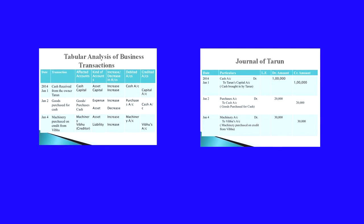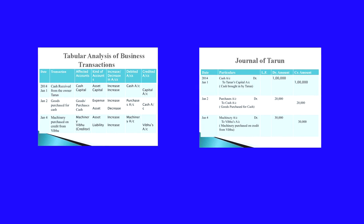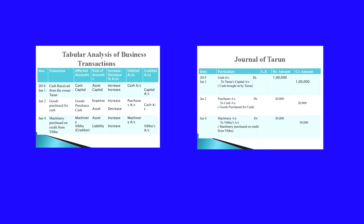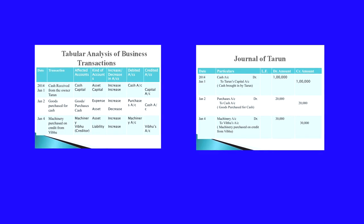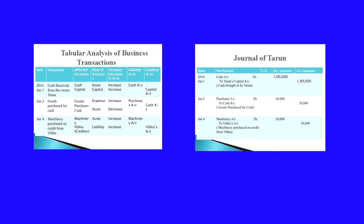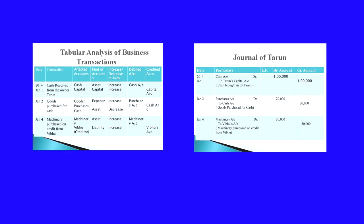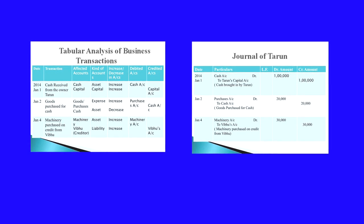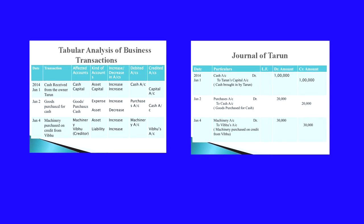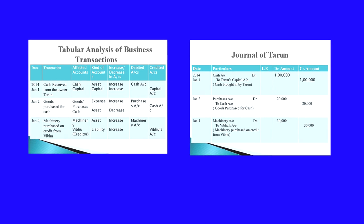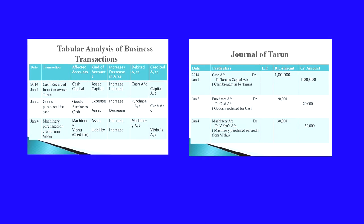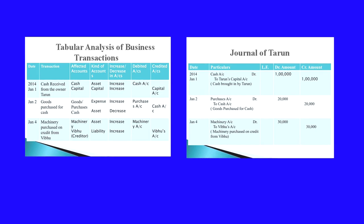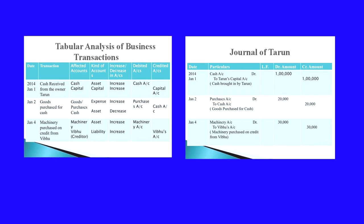We have to identify which accounts are affected. Cash is received from the owner, so cash is coming inside the business — cash is one account. It is coming in the form of capital, so capital is also another affected account. Cash falls under the asset account and capital under the capital account. In this transaction, cash is increasing and capital is also increasing. Applying the rules: cash account is debited and capital account is credited.